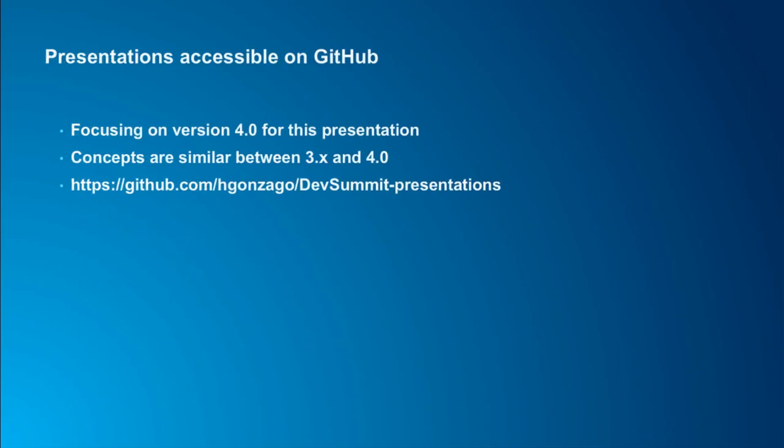The presentation information is accessible on GitHub. We made a few updates right before, so if you download it today, you might want to go back tomorrow and get the latest version. We are going to focus on version 4.0 of the JavaScript API in this session. We did version 3.0 at user conference last year, so if you're still in the 3x world, those slides are in the same GitHub repository along with demos in version 3x of the JavaScript API.